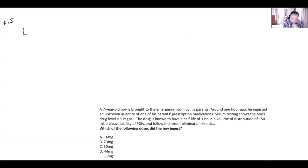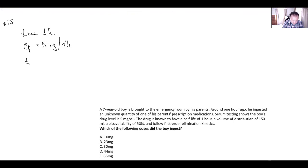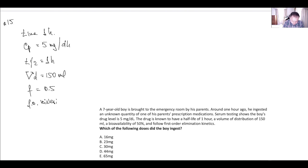Next question: one hour ago. We have a time frame of 1 hour. Plasma level is 5 milligrams per deciliter — careful with units. Half-life is 1 hour, and volume of distribution is 150 milliliters. Bioavailability is 0.5, and we have first-order kinetics, so we can work with the half-life. The question is asking about the ingested dose.